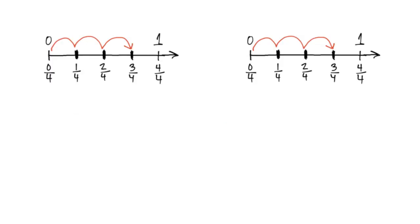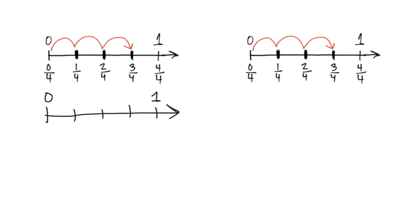Following that same idea, we can understand the relationships between three fourths and other fractions that are the same thing as three fourths. There is my exact copy of three fourths. I should label this zero and label that one. Now if I wanted to figure out a different name for three fourths, all I have to do is choose a number of pieces to cut each one of these into.